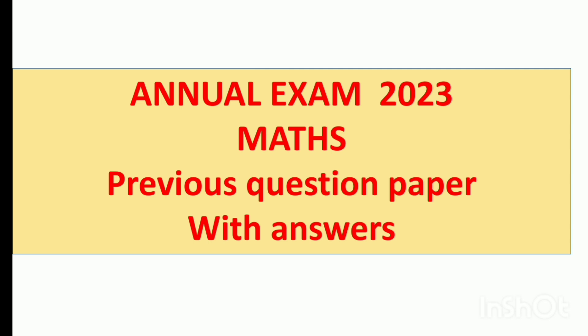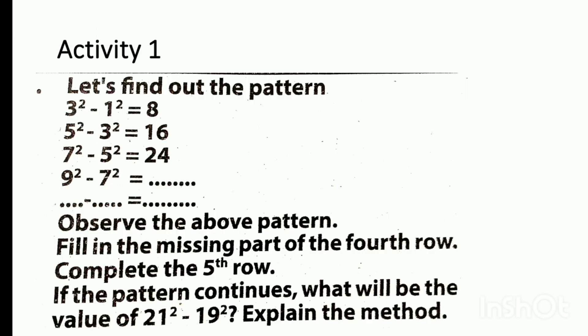Let us find out the pattern. 3 square minus 1 square. 5 square minus 3 square equal to 60. 7 square minus 5 square equal to 24. 9 square minus 7 square. Observe the above pattern. Let us find out the missing part of the fourth row and complete the fifth row. If the pattern continues, what will be the value of 21 square minus 19 square? Explain the method.